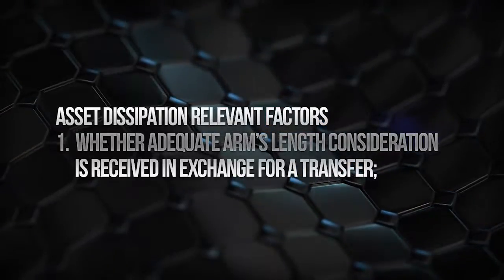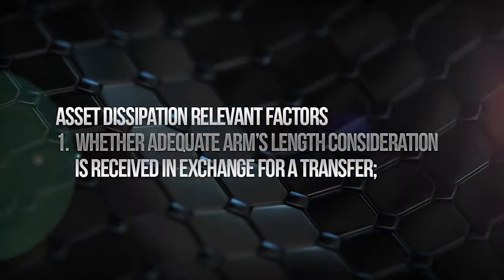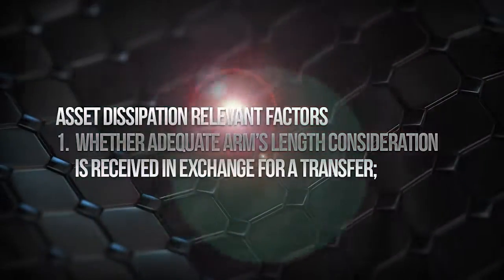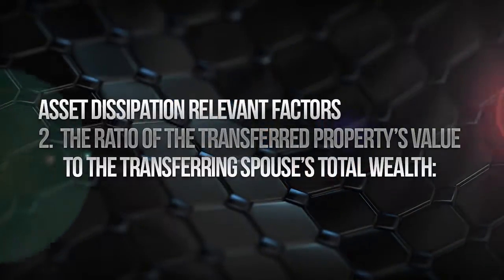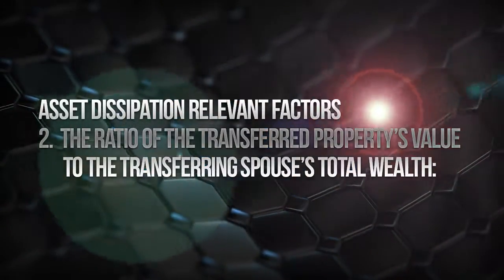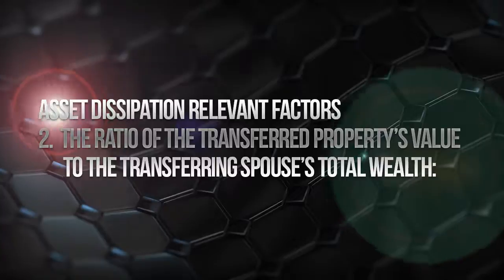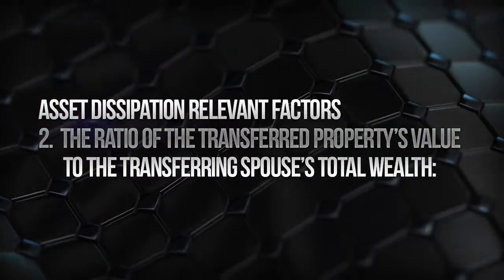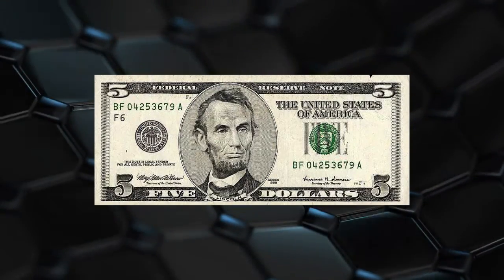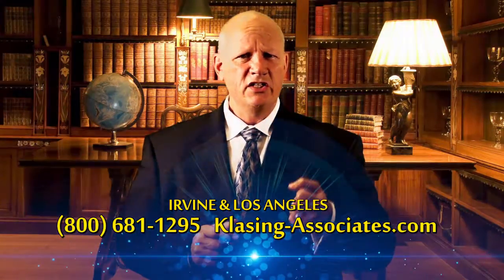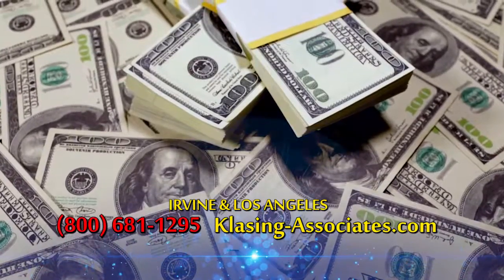Whether adequate arm's length consideration is exchanged between the parties in a particular transfer. The court is also going to be interested in the ratio between the value of the asset that's transferred and the total assets in the couple's marital estate. In other words, if we're talking about a $5 item, it's not going to get as much attention as a $5 million item.